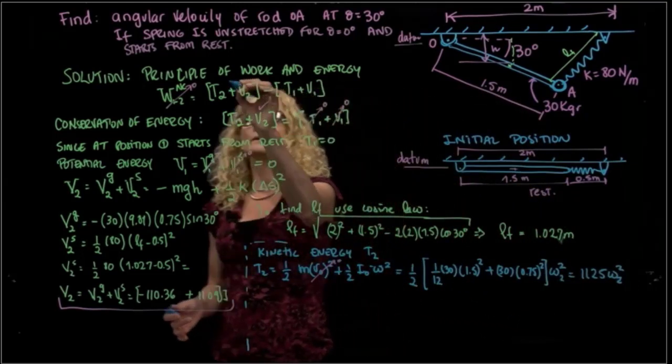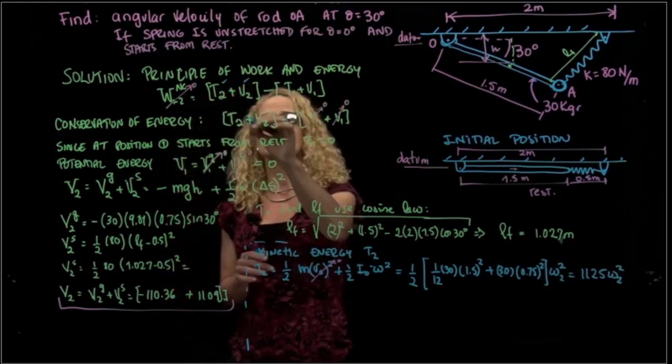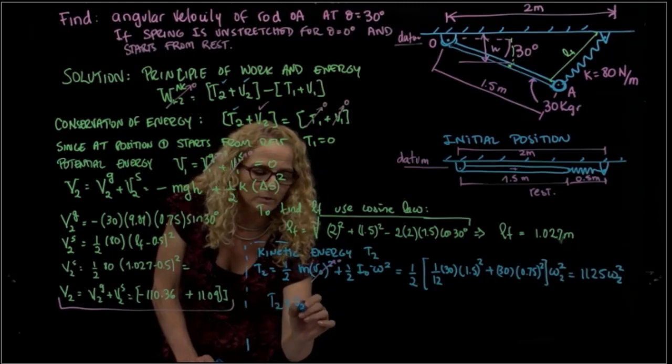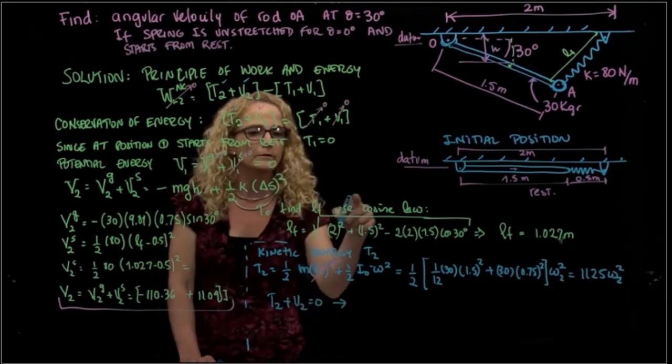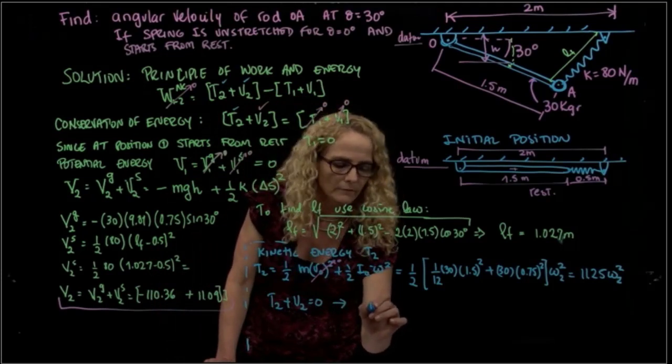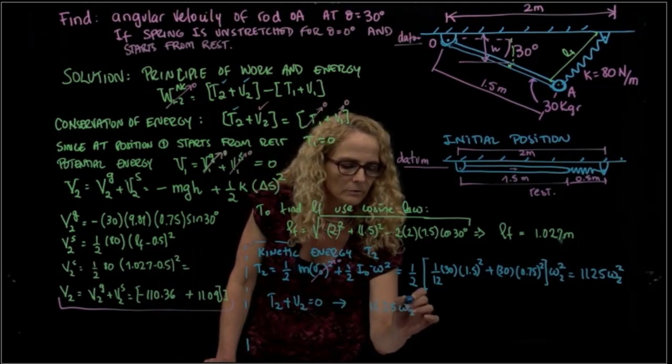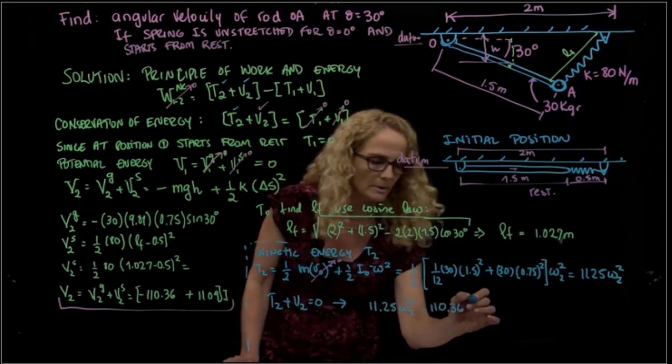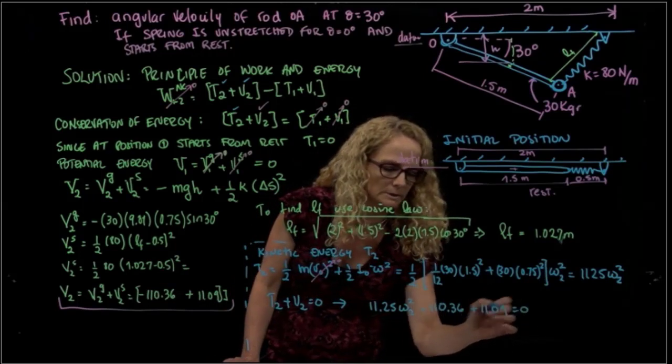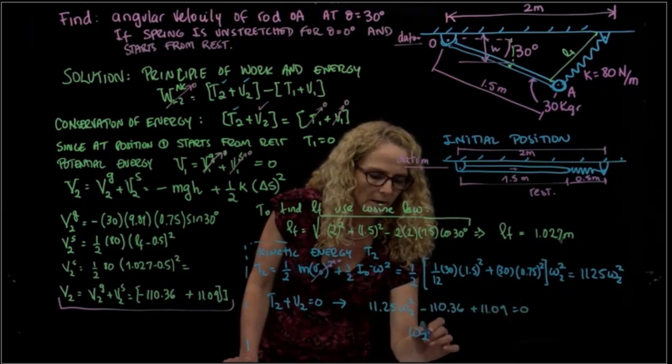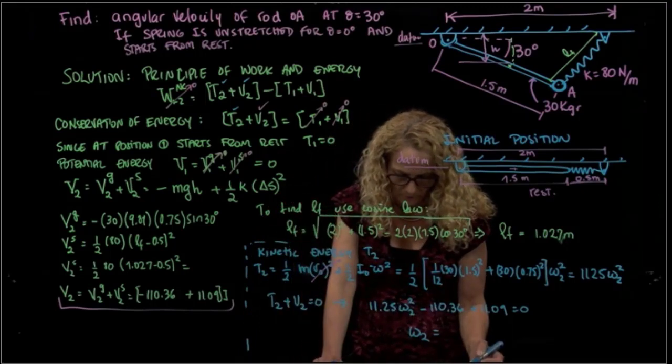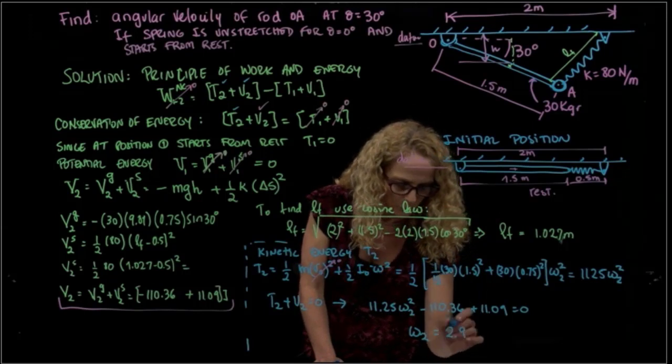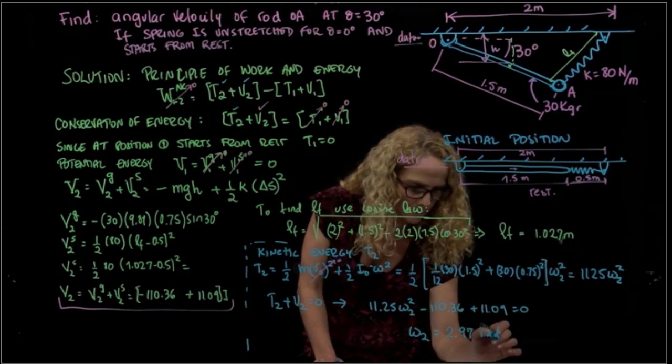Well, finally, we have also then those two values. So then, T2 plus V2 is equal to 0, so I have 11.25 omega 2 squared minus 110.36 plus 11.09, that's equal to 0, and that allows me to calculate the value of the angular velocity in the final position, which is 2.97 radians over second.